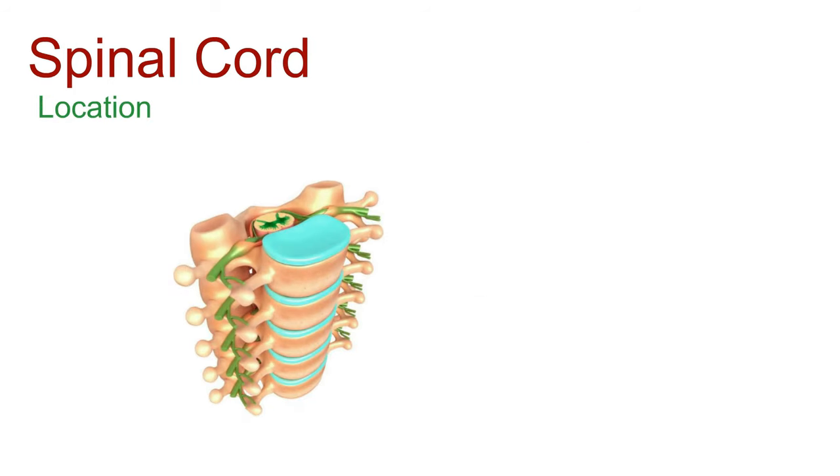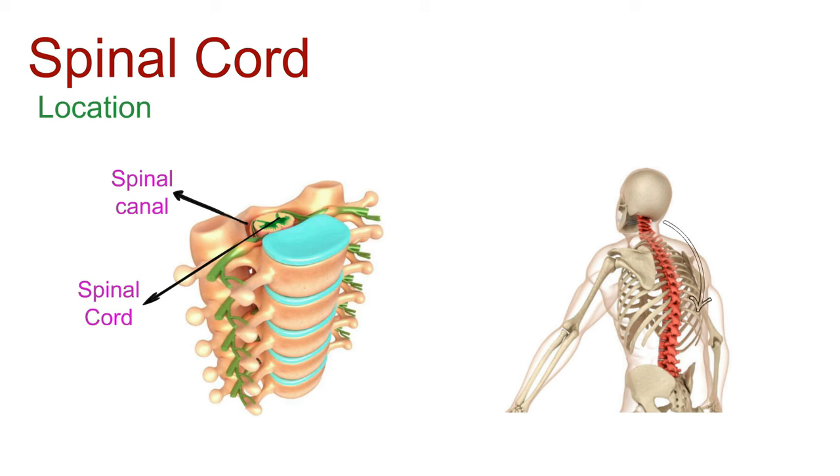Now, where does this spectacle unfold? Picture the spinal cord nestled within the spinal canal, gracefully descending from the brain through the upper reaches of the vertebral column. In adults, it usually wraps up its journey around the first or second lumbar vertebrae, though, like any great story, there can be some variation.